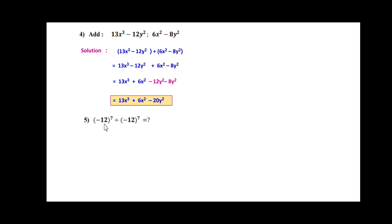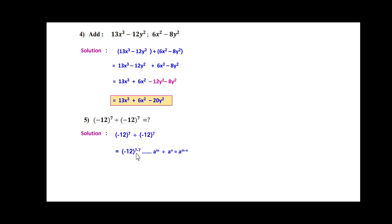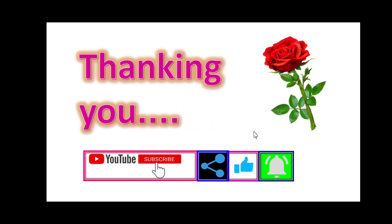The last problem: (−12)⁷ ÷ (−12)⁷ = ? This is based on the laws of indices. The base is −12 and the indices are both 7, so we apply a^m ÷ a^n = a^(m−n). This gives (−12)^(7−7) = (−12)^0. Since any number raised to 0 is 1, the answer is 1. I think all of you understood these problems — please practice them. Thank you for watching this video.